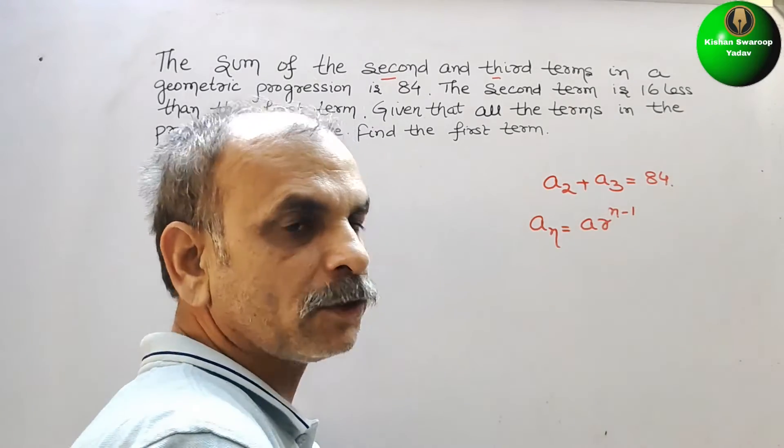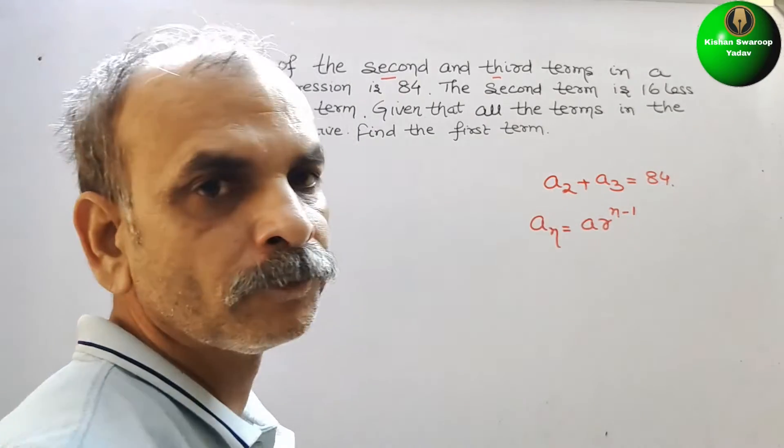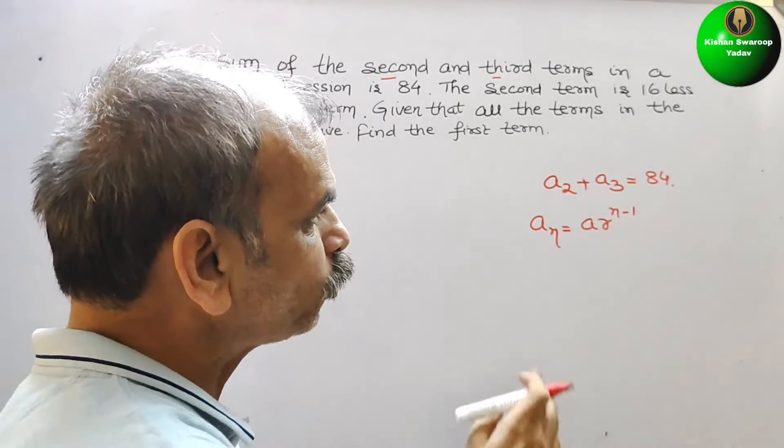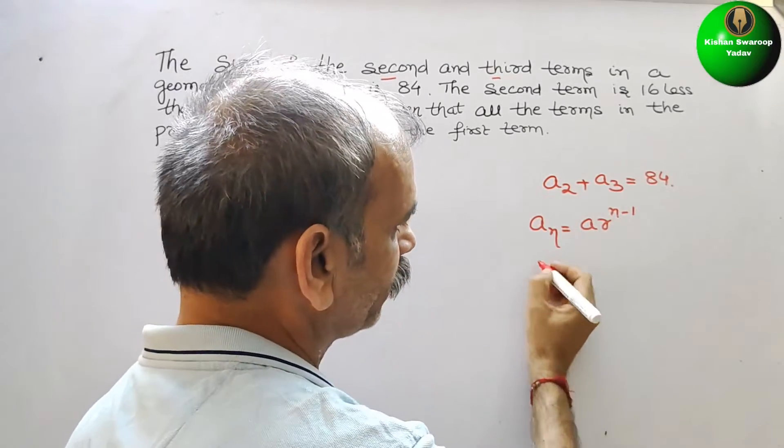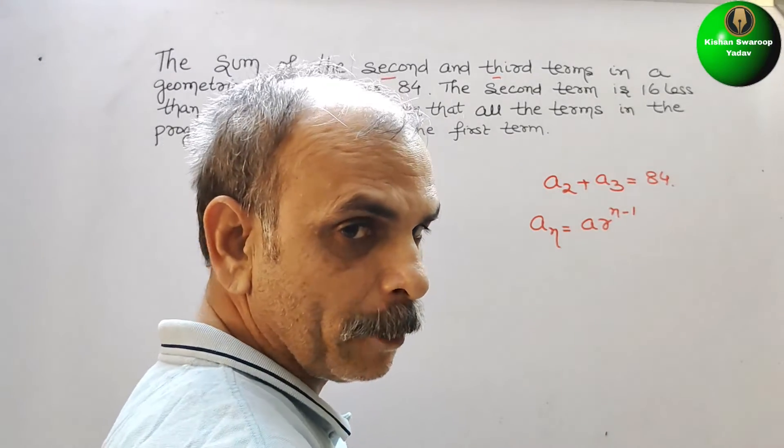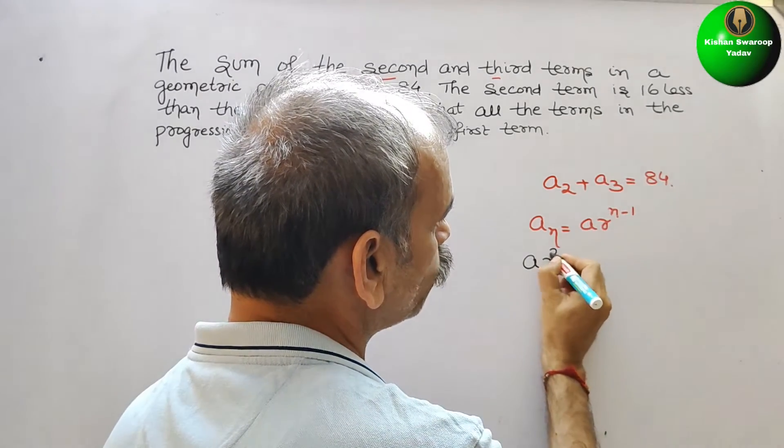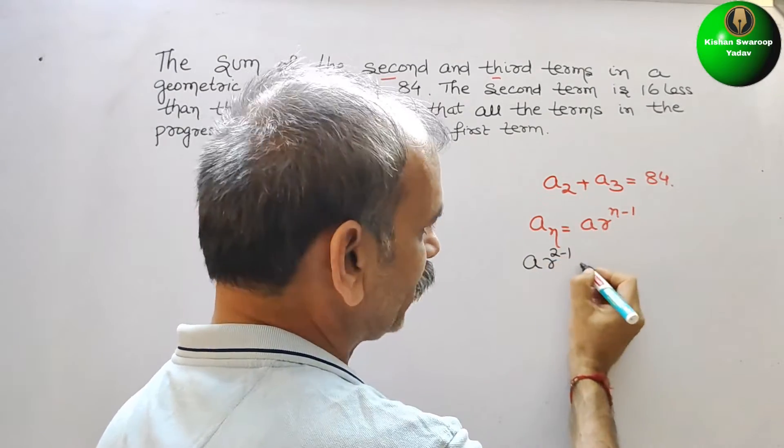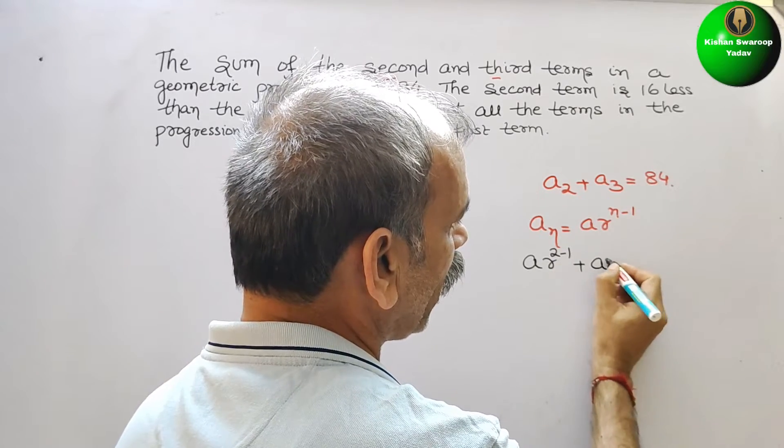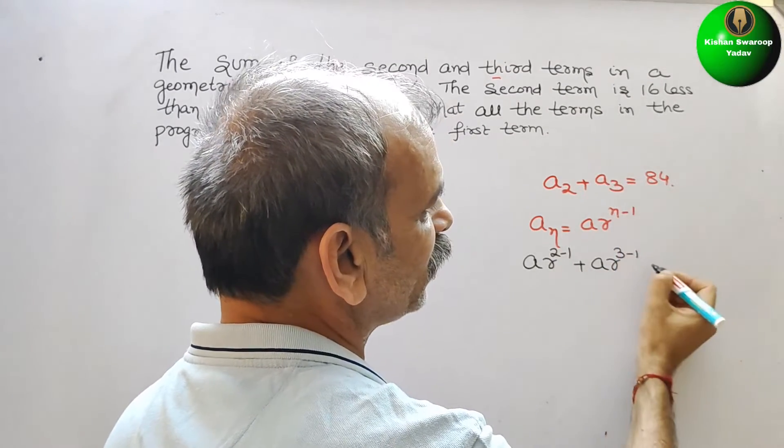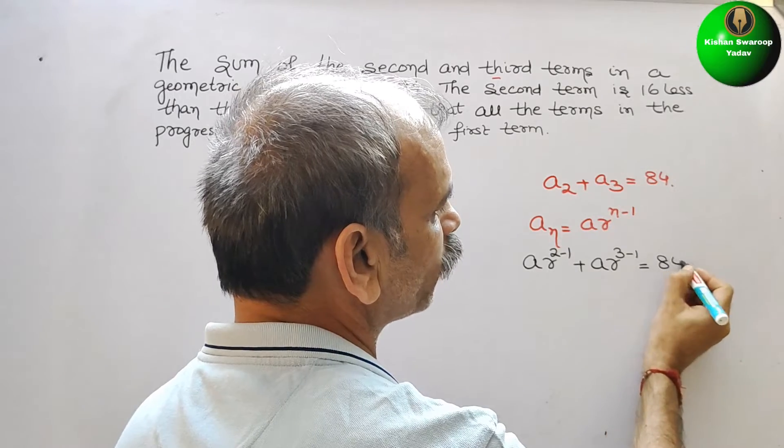Now we will substitute this value here. a2 means what? a times r to the power 2 minus 1 plus a times r to the power 3 minus 1, that is a3, that is equal to 84.